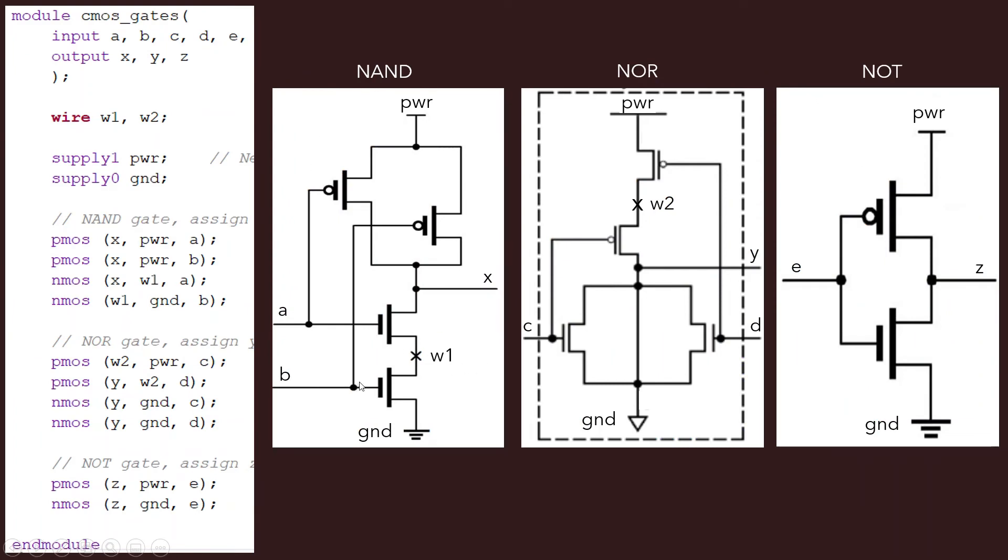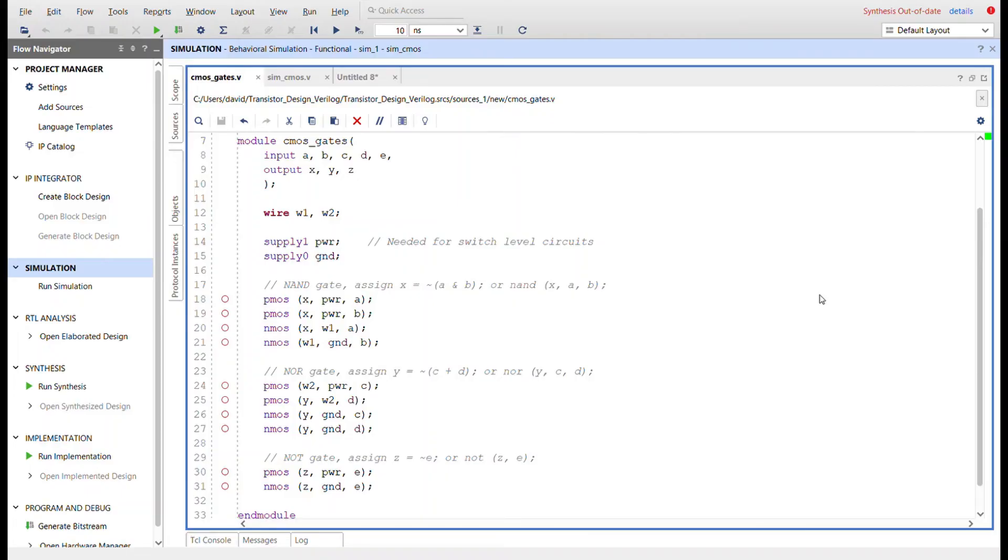So here's the code that I came up with for all those gates we just saw a little bit ago. I got the NAND gate right here, the NOR gate right here, and the NOT gate right here. And that's each one of these and all the signals are labeled. And this is what I'm going to simulate. So let me take you over to the code.